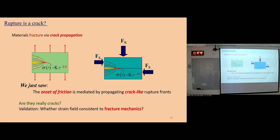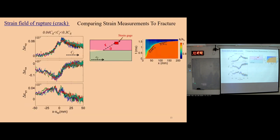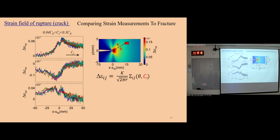To validate this, we need to consider whether the strain field is consistent with fracture mechanics. We have strain gauges above the interface. When the crack is propagating, the radius and angle change. I show the experimental result from three components of the strain gauge — you see some wiggling profiles. At the same time, from the LEFM solution we can get the prediction of the strain gauge, shown as black lines. Here we only have one free parameter, K. With this one free parameter K, we can fit all three components pretty well.